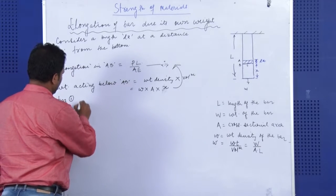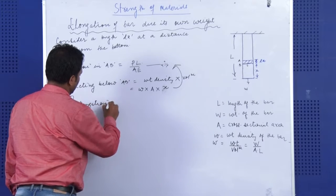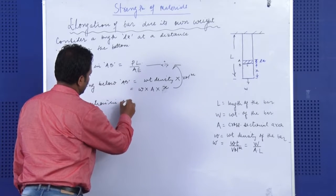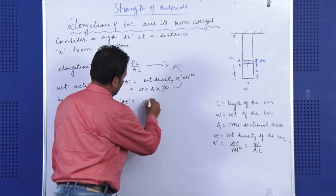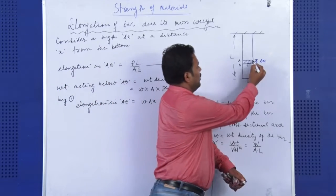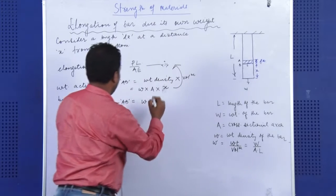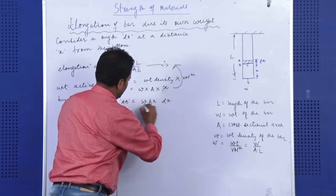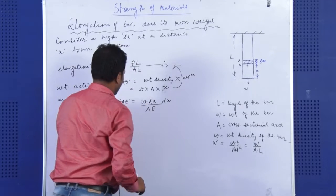So by equation 1, what we can write elongation in AB. It would be equal to WAX in the place of P. In the place of L, since we are trying to find the elongation of this elementary part only, it is DX, DX and A and E are constant, A to A is cancelled.